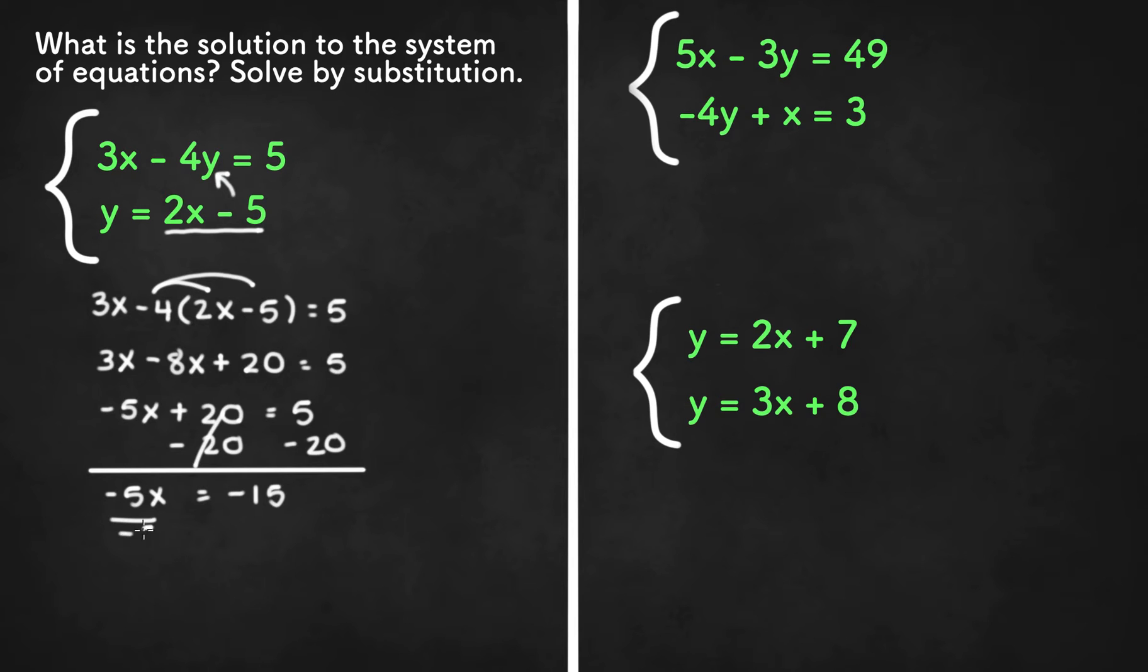Now once we divide both sides by negative 5 we are left with x equals negative 15 divided by negative 5 or x equals 3. And that is the solution for the x value.